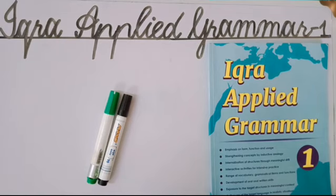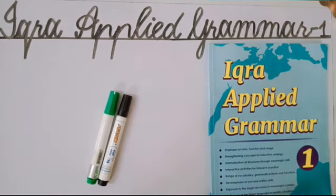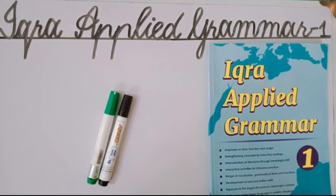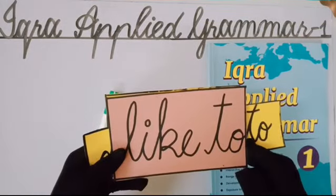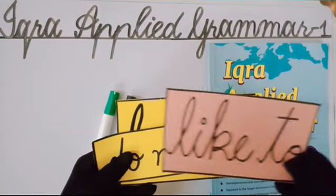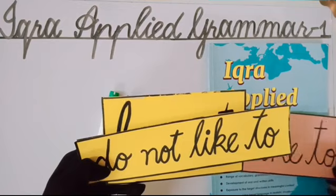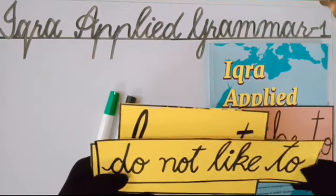So, can you tell me what is the topic of unit number nine? It is 'like to' and 'love to.' We use this in simple present tense. We have started this topic, so let's revise: 'like to,' 'do not like to,' 'love to,' 'do not love to.'